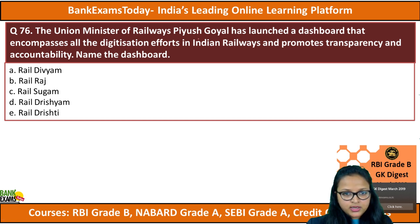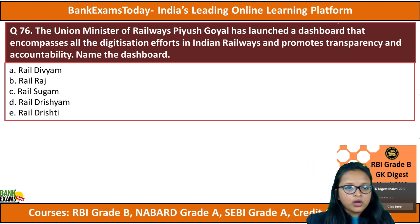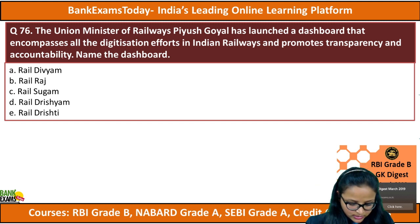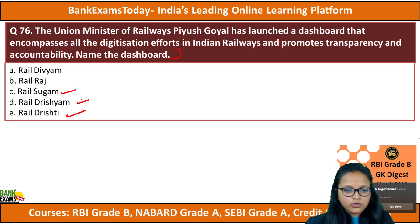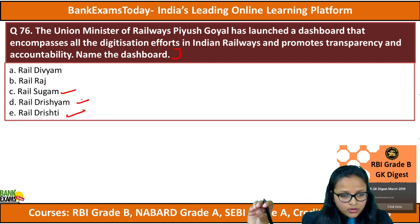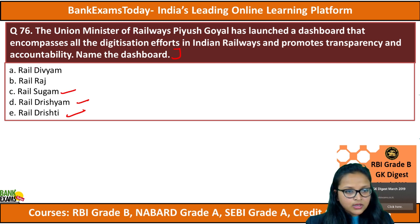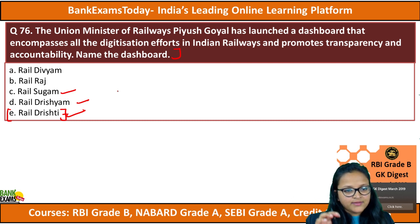Question number 76: Union Railway Minister Piyush Goyal has recently launched a dashboard containing all kinds of information about Indian Railways to promote transparency and accountability. Name the dashboard. The options are Rail Divyam, Rail Raj, Rail Sugam, Drishyam, or Drishti. Whenever you open the IRCTC website, you will see this dashboard — it is Rail Drishti.